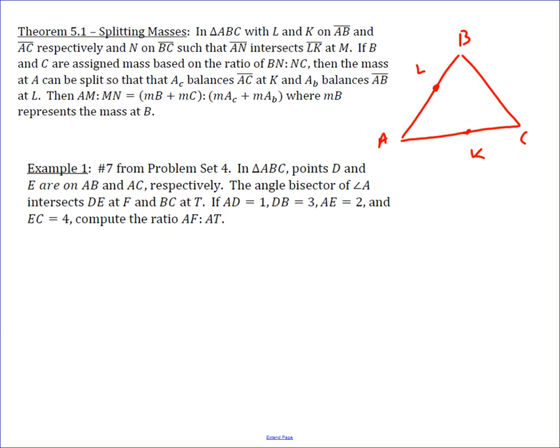And then you draw in L, K, and an N over here. When you connect that up, instead of your normal Cevian and a Cevian together to use mass points, we now have this line connecting two sides and then a Cevian in.